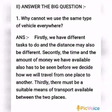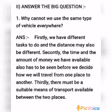From Letter 2, answer the question. Question number 1: Why cannot we use the same type of vehicle everywhere? Answer: Firstly, we have different places to go to and the distance may also be different. Secondly, the time and the amount of money we have available also has to be seen before we decide how we will travel from one place to another. Thirdly, there must be a suitable means of transport available between the two places.